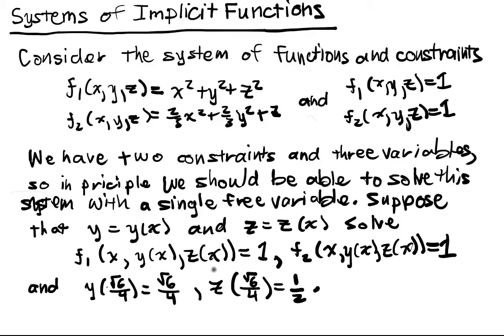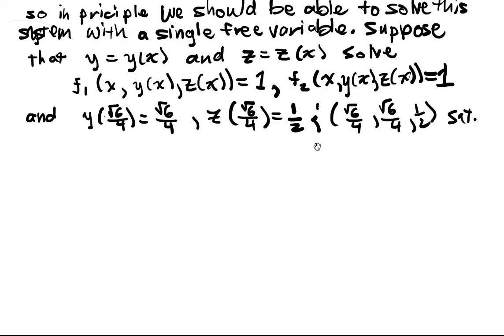And you can see that the corresponding point (√6/4, √6/4, 1/2) satisfies the constraints. So this is, in fact, a point satisfying the constraints. Now it's not really a level set, but it's something like a level set. It's like an intersection of two level sets.